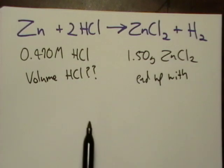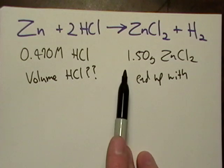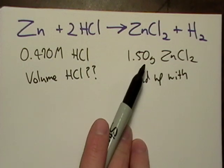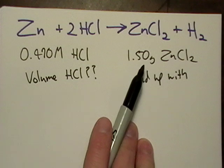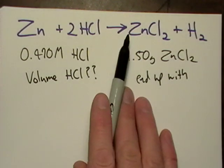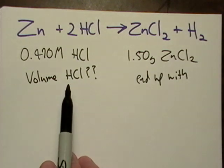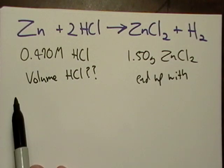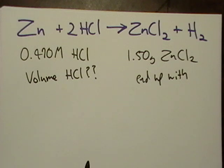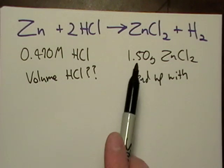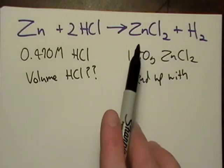The strategy is to convert this mass of zinc chloride into moles, then use the stoichiometric ratio of zinc chloride to hydrochloric acid to find the volume of acid needed. This is called solution stoichiometry. We're going to go from grams to moles, then from one mole of zinc chloride to two moles of hydrochloric acid.